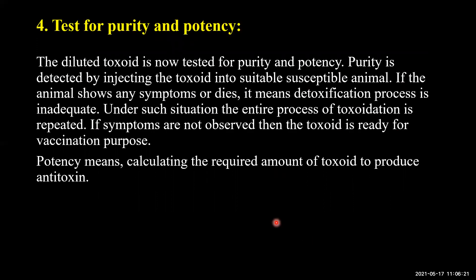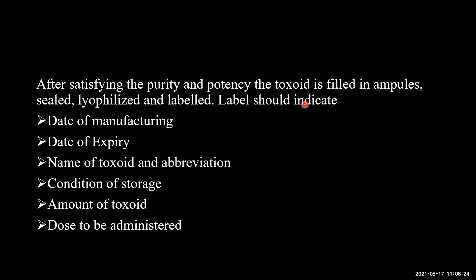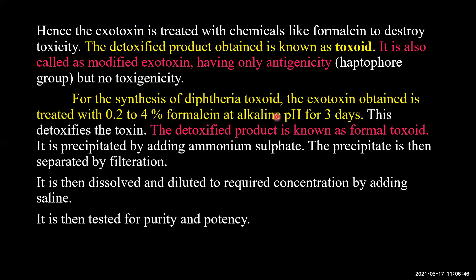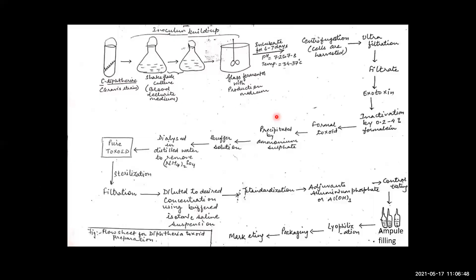After satisfying purity and potency requirements, the toxoid is filled in ampoules, sealed, lyophilized, and labeled. The label should indicate the date of manufacturing, date of expiry, storage conditions, amount of toxoid present, dose to be administered, and the name and potency of the toxoid.